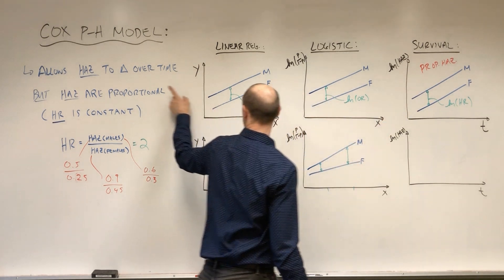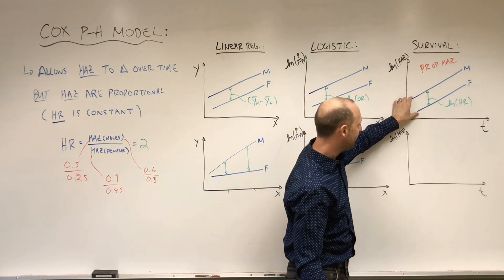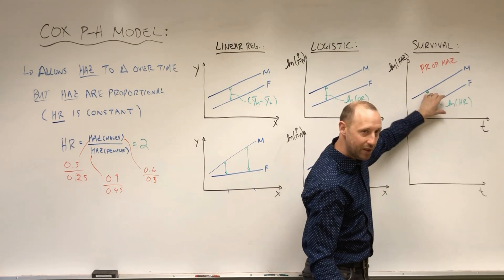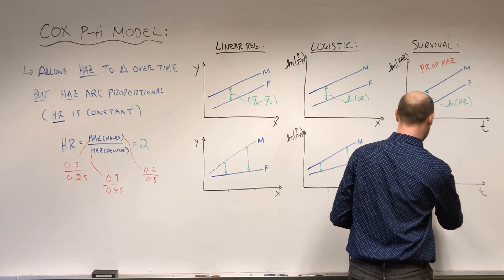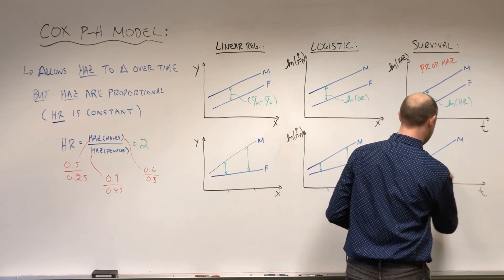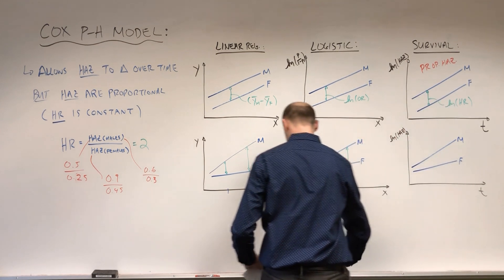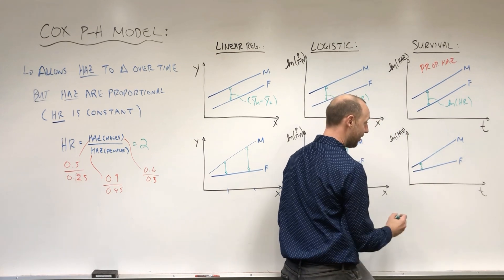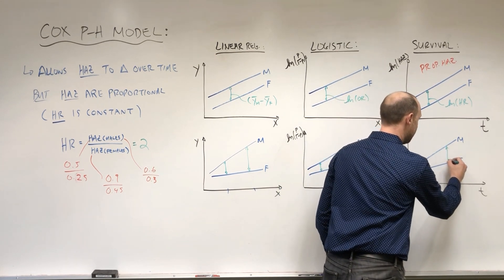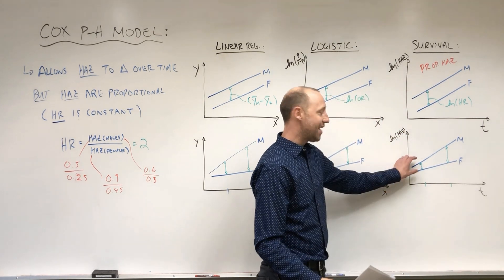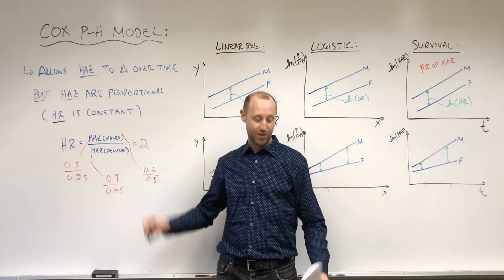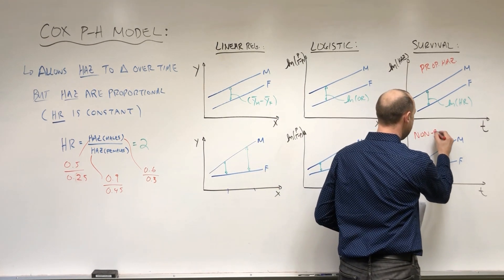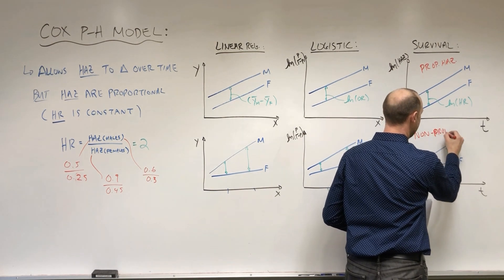If instead we saw lines for males and females where the distance between them changes — say the lines converge or diverge — then the log hazard ratio depends on time, meaning the hazard ratio is changing over time and the hazard ratio is not constant. So this is non-proportional hazards.